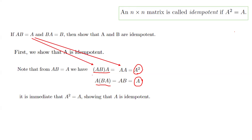The left-hand sides are equal to each other, and the right-hand sides must be equal to each other. With the same argument, B is idempotent as well. So as long as AB equals A and BA equals B, we can show that both A and B are idempotent matrices.